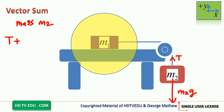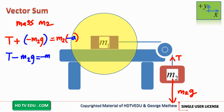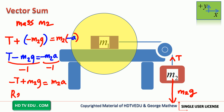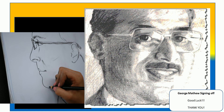For mass m2 using the vector sum: tension acts along positive y (positive), gravitational force acts along negative y (negative), and acceleration is downward, so it is negative a. This gives T minus m2g equals negative m2a. Multiplying throughout by negative one and rearranging: m2g minus T equals m2a. This is George Matthew signing off — good luck.